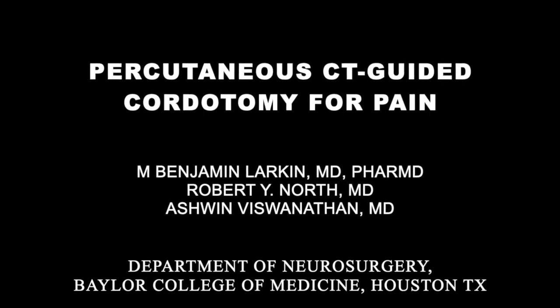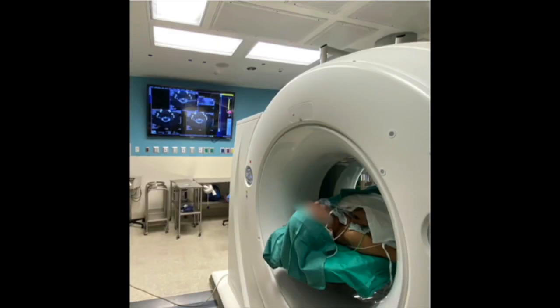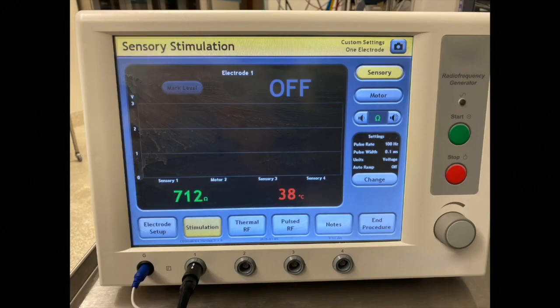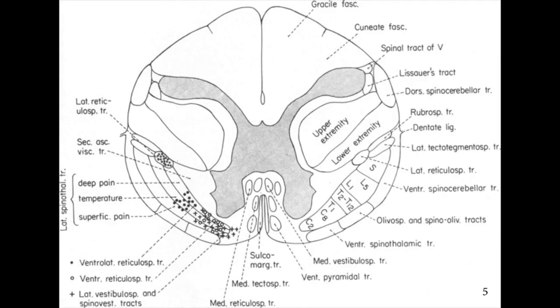This video illustrates a CT-guided percutaneous radio frequency electrode placement into the upper cervical spinal cord through the C1-C2 interspace for ablation of the anterolateral spinothalamic tracts for the treatment of cancer-related pain.